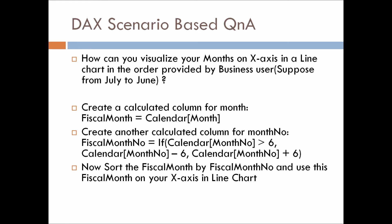For this, we have to do three things. First, we create a calculated column for the month — 'Physical Month' equals 'Calendar Month'. As you can see here, this is simply a replication of the existing month present in the calendar table.